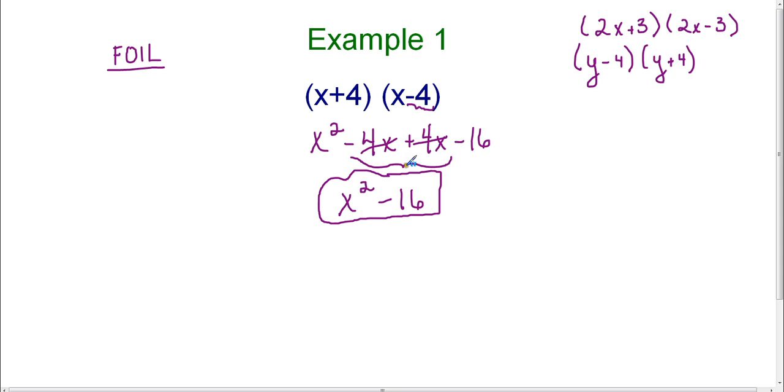And just as a heads up, this will always happen. If you have the same exact binomial with different signs, the middle term will always be eliminated. It will always equal zero. So we end up with the first term squared and the last term squared.